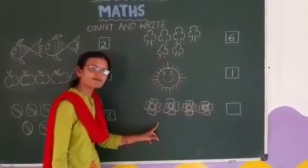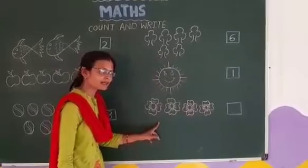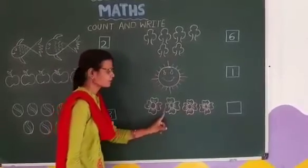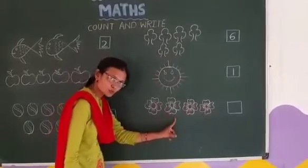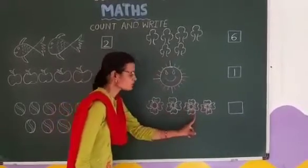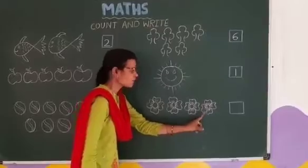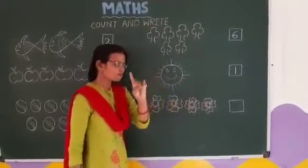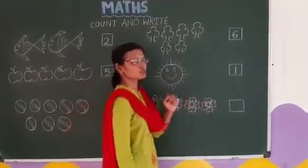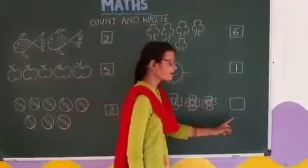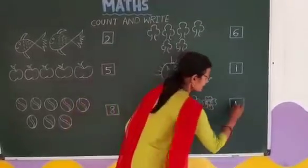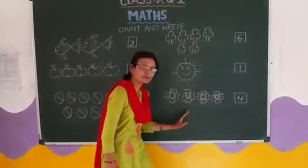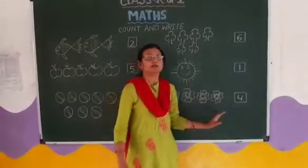Now, how many flowers are here? 1, 2, 3, 4. 4 flowers. So we will write 4 here. 4 flowers.